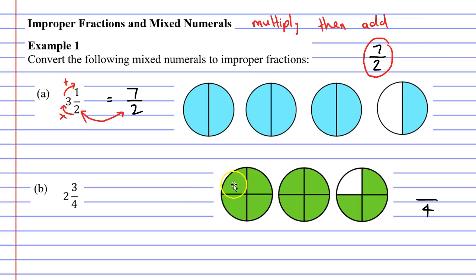If I count how many pieces are shaded in I have 1, 2, 3, 4, 5, 6, 7, 8, 9, 10, 11 pieces shaded in. So it's 11 over 4.